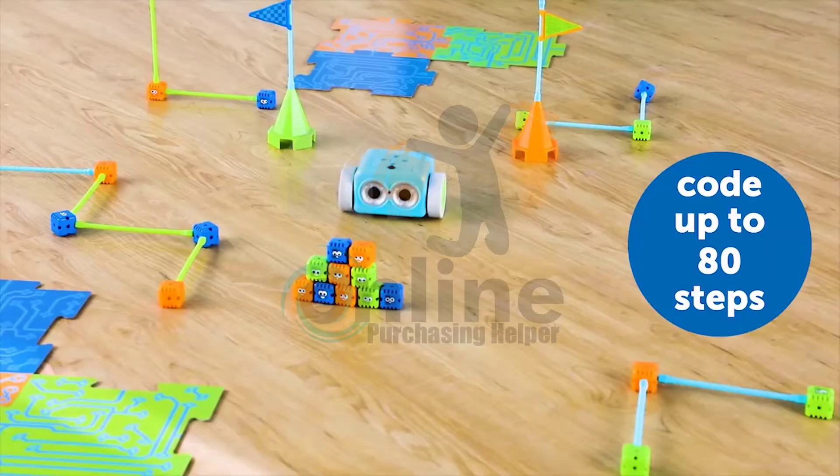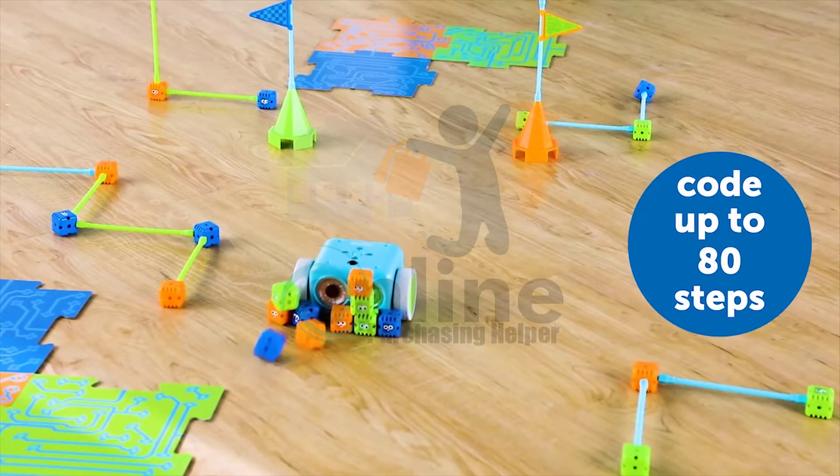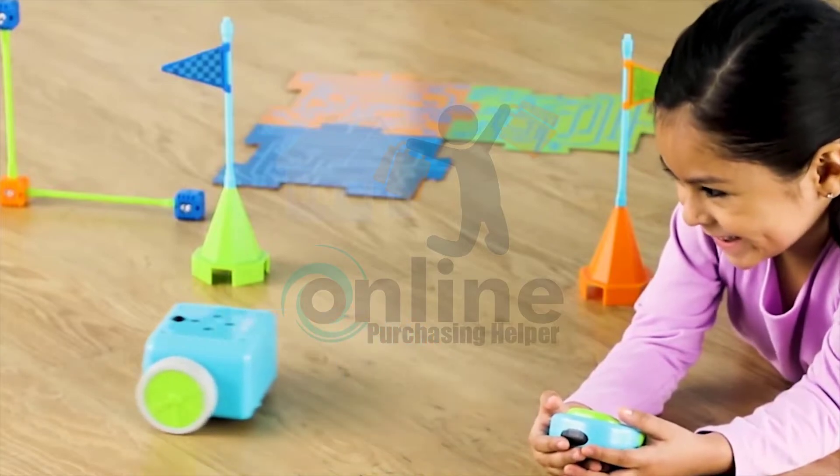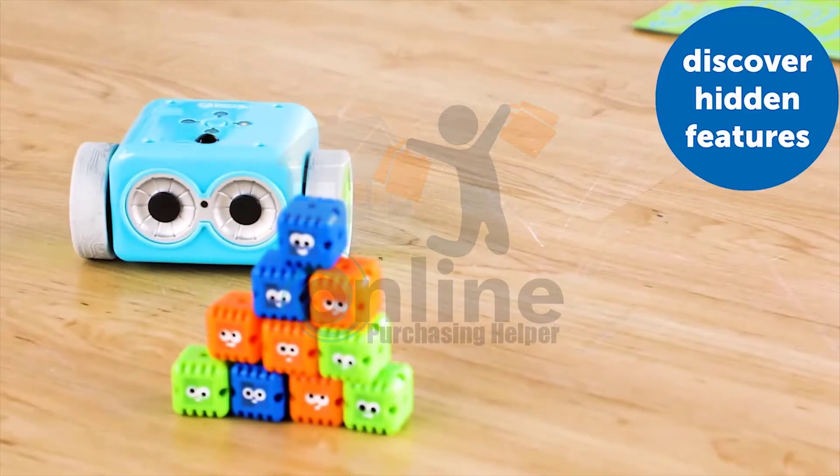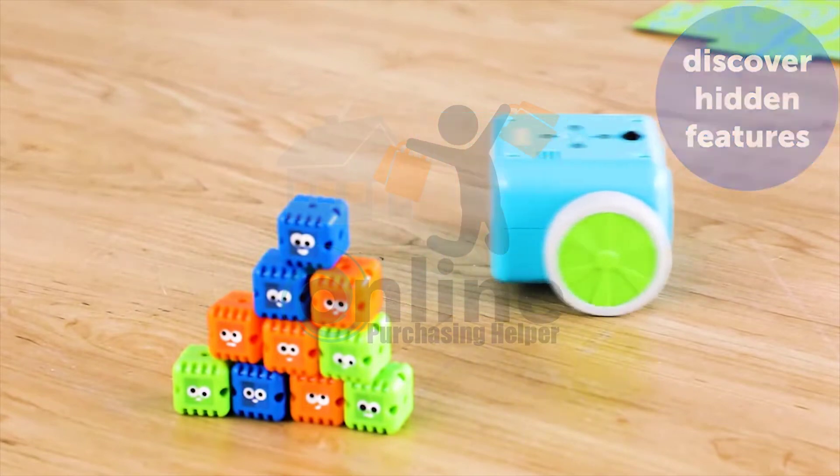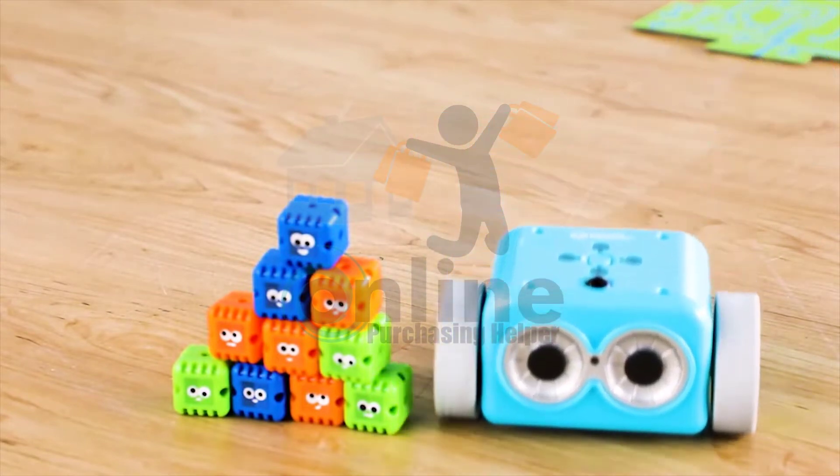You can code Botly to move up to 80 steps in a row or press clear to begin a completely new path. Discover Botly's hidden features, which include another 40 steps and more fun, playful sounds.